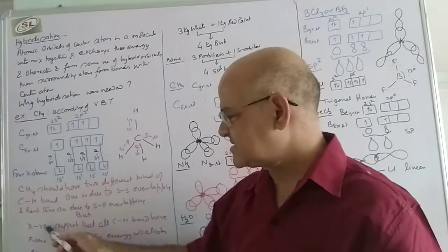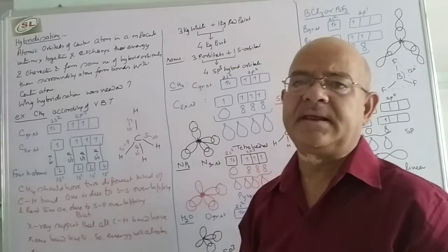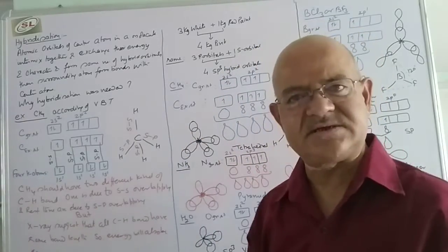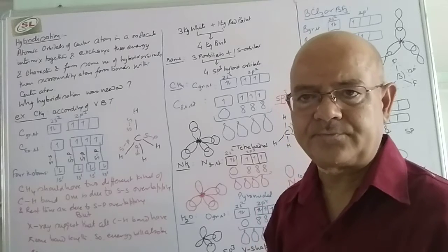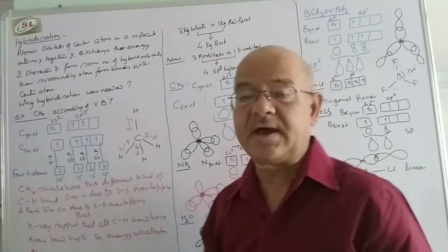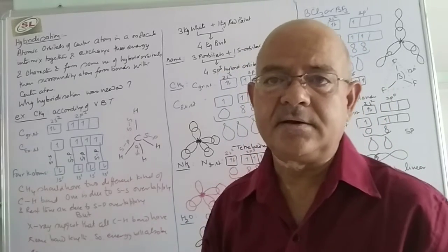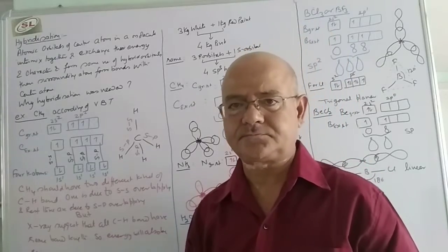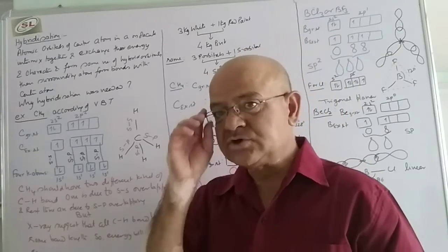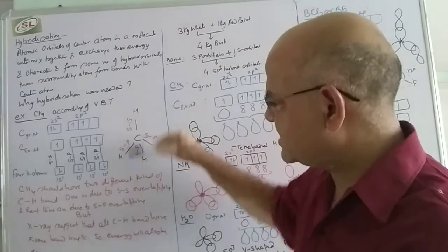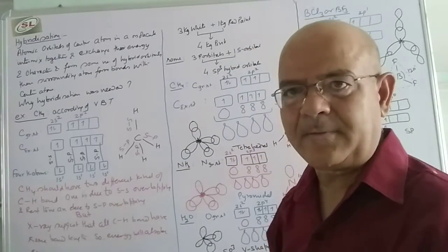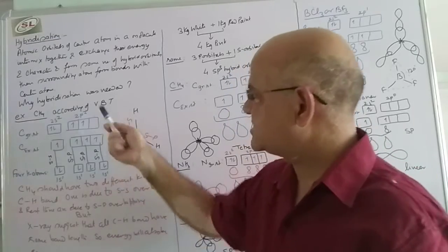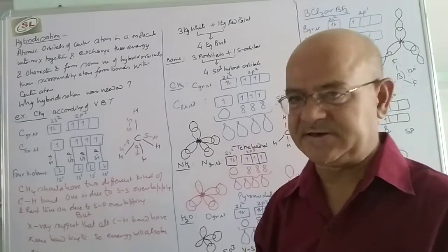But X-ray evidence tells us that all 4 C-H bonds in CH4 are identical. X-ray is a practical phenomenon and cannot be wrong. So to explain this problem, we switch over from Valence Bond Theory to hybridization.